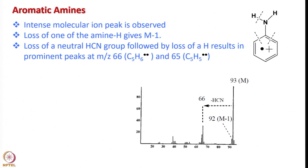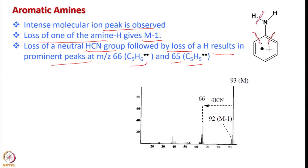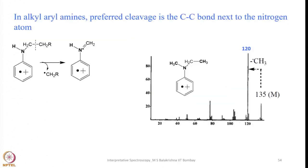Now let us look at aromatic amines. An intense molecular ion peak is observed. Loss of an amine hydrogen leads to an M-1 peak. Loss of a neutral HCN group followed by loss of H results in a prominent peak at m/z = 66 (C5H6 radical) or 65 (C5H5 radical). A typical aniline spectrum shows a molecular weight of 93; it loses 1 to give 92, and then HCN loss gives 66. With a longer chain, preferred cleavage leads to elimination of a CH2 radical and formation of an iminium species.